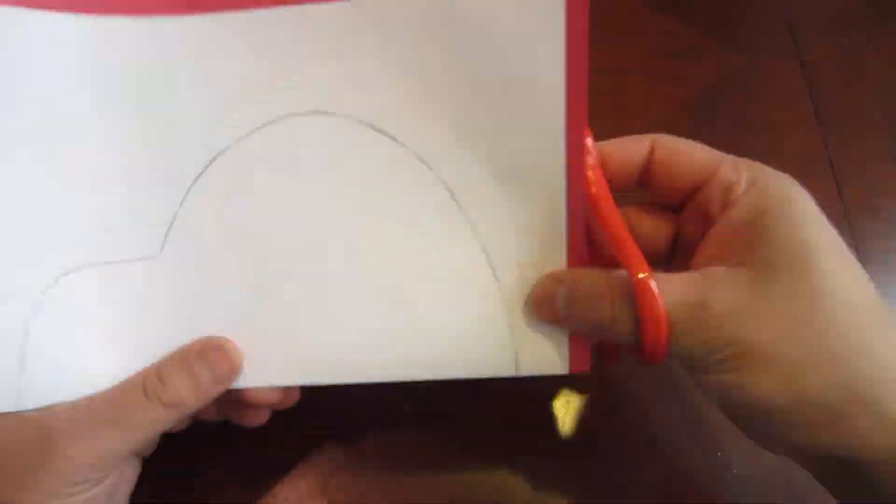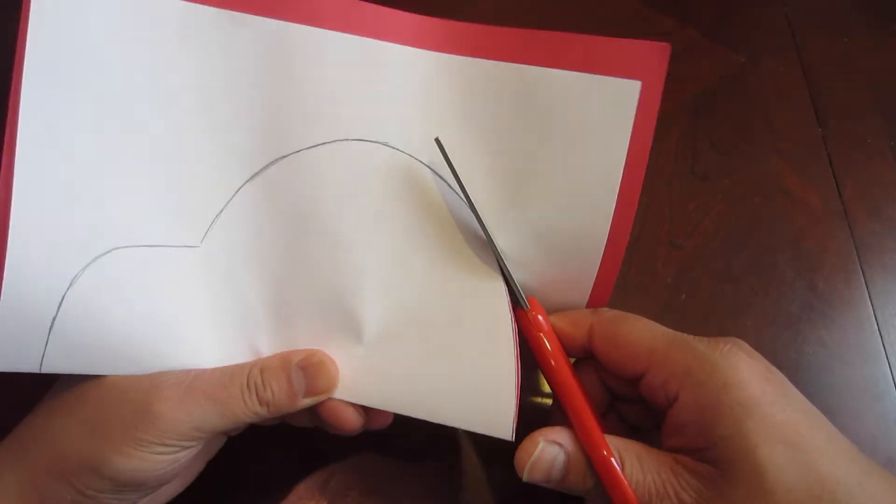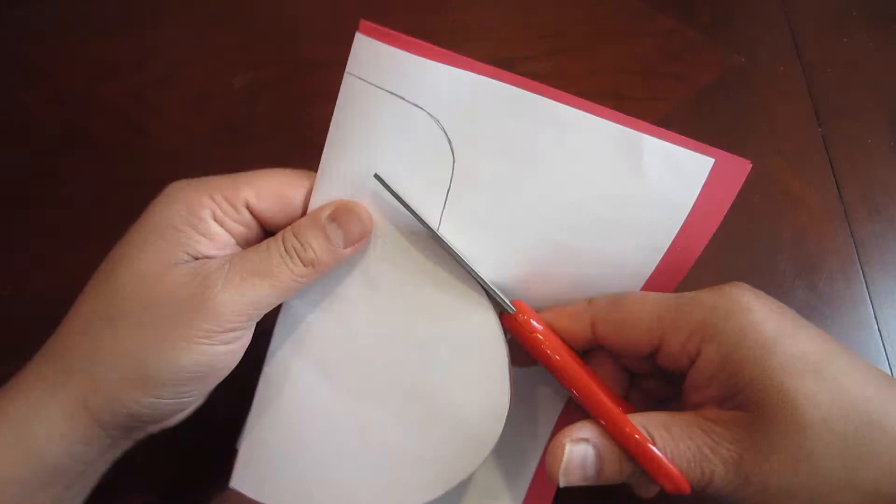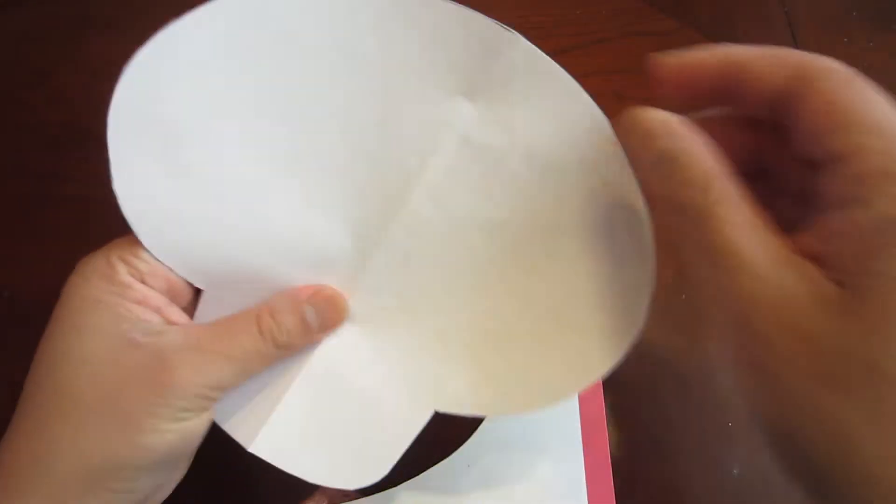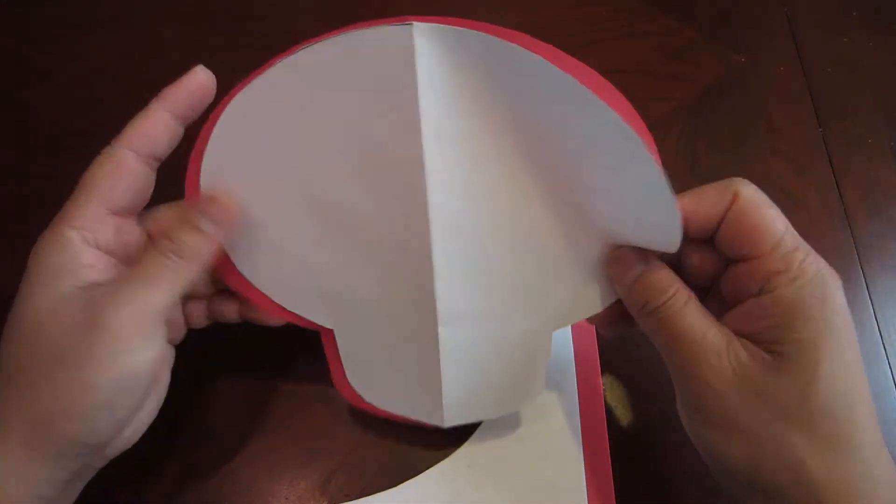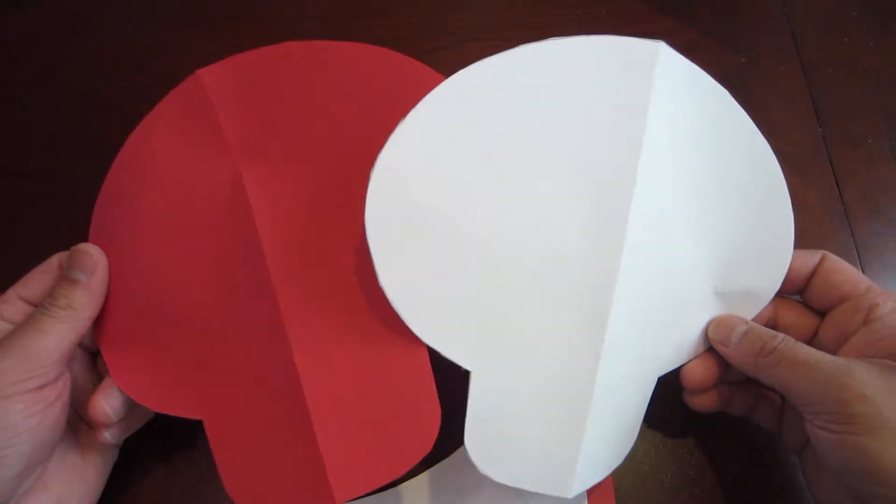When ready, let's start cutting out. Once done, you should have two same size mushrooms, red and white.